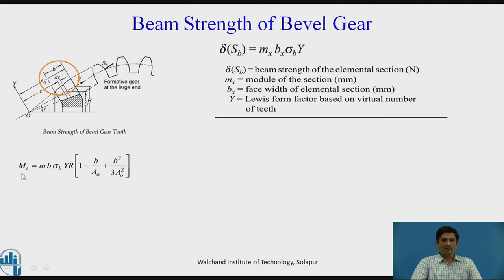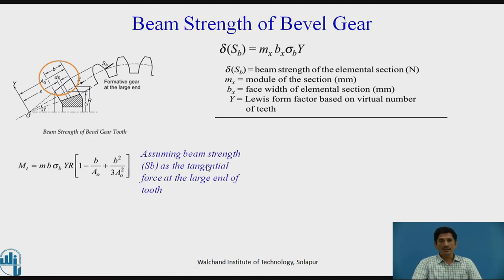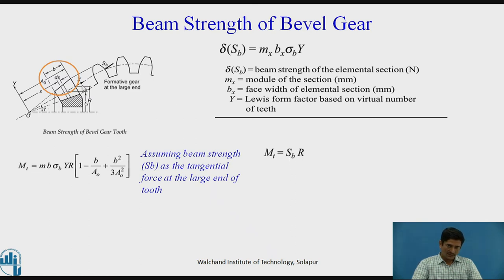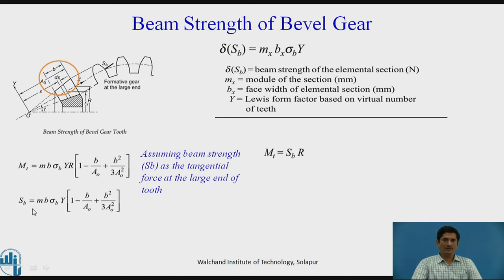We know that the torque equation is: m × b × sigma_b × y × r × (1 - b/A₀ + b²/3A₀²). We have obtained another equation of torque assuming that beam strength Sb is the tangential force acting at the larger end of the tooth. Hence the other equation of torque is mt = Sb × r, because Sb is acting at the point where the radius is r. Comparing these two equations, we have defined Sb = m × b × sigma_b × y × (1 - b/A₀ + b²/3A₀²).